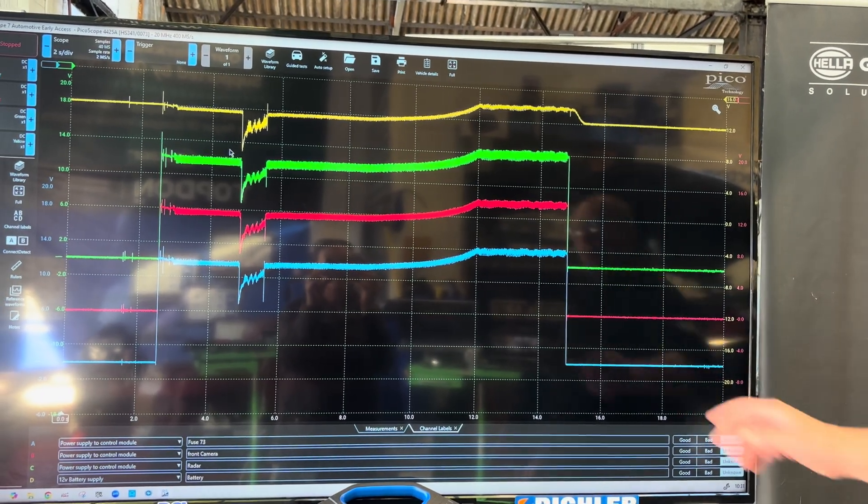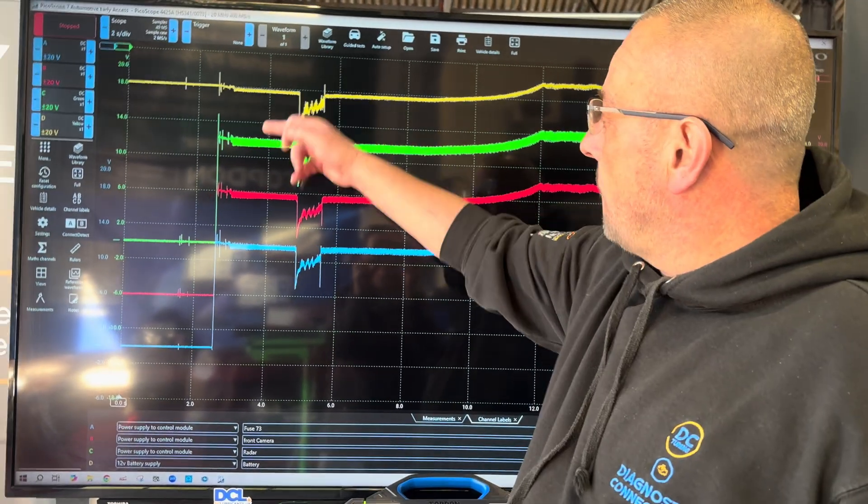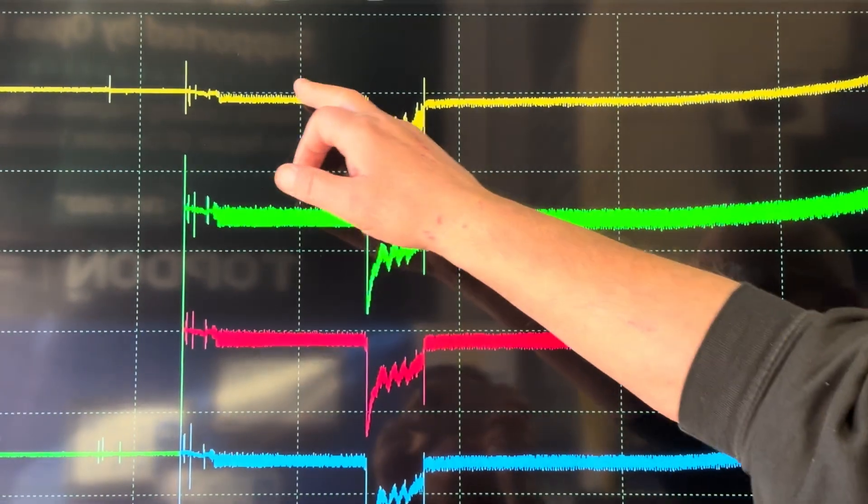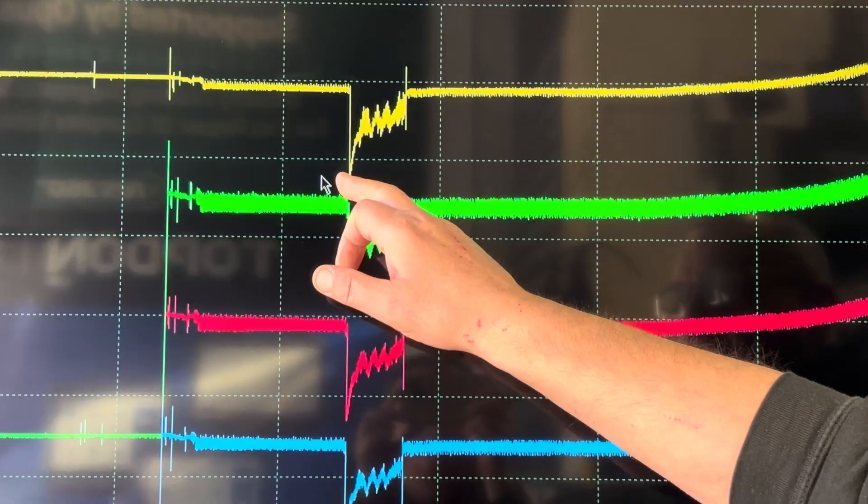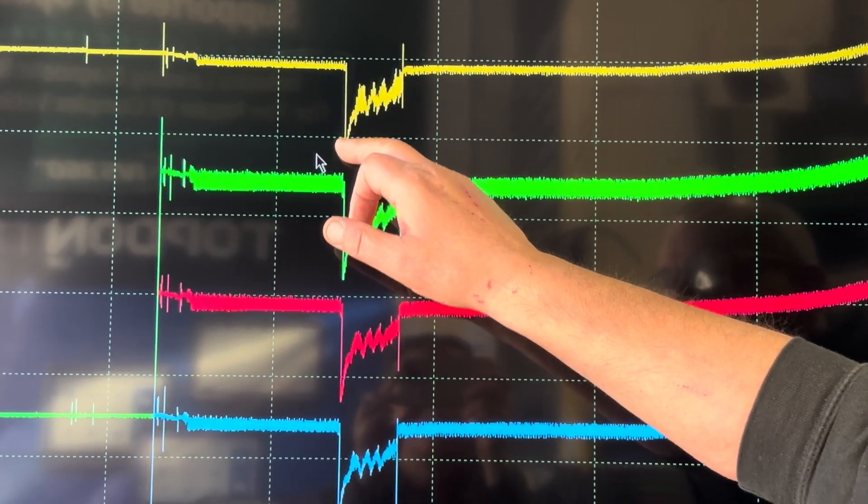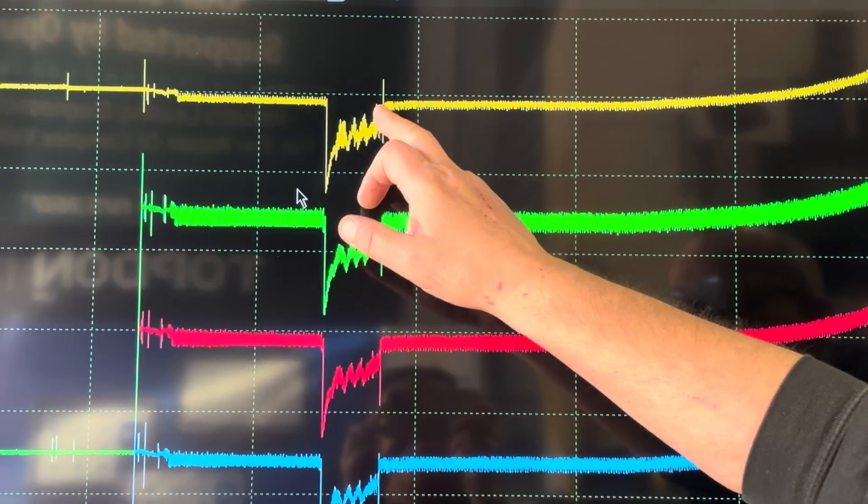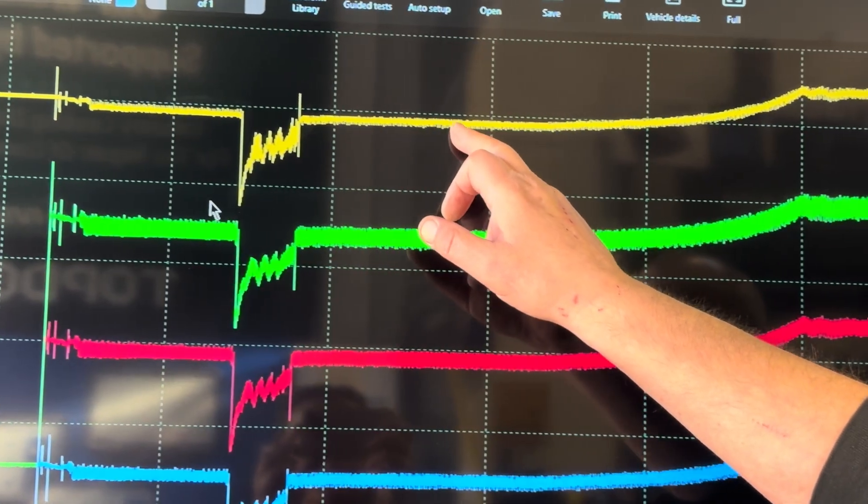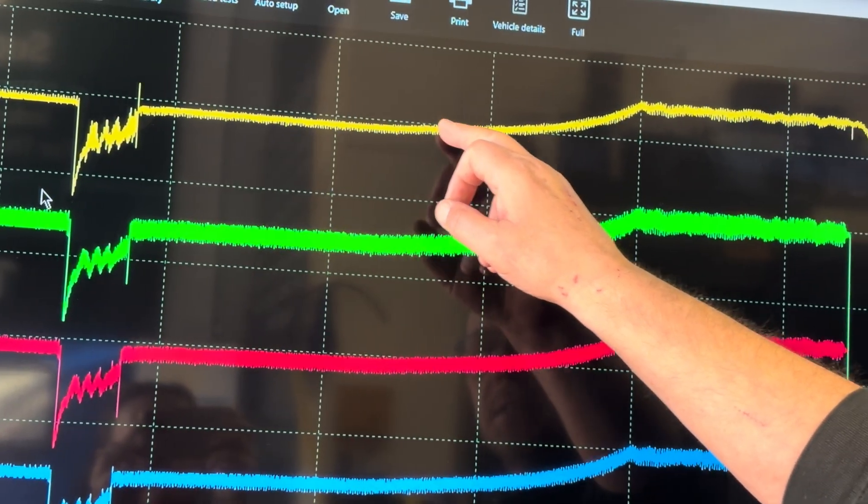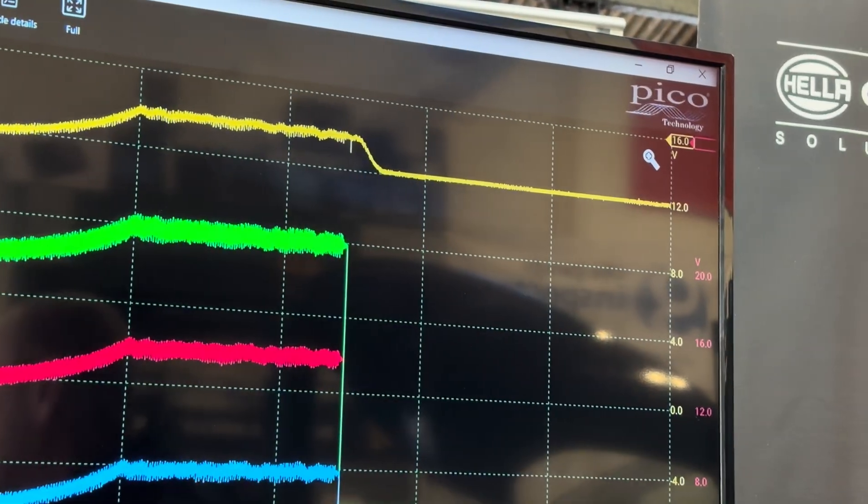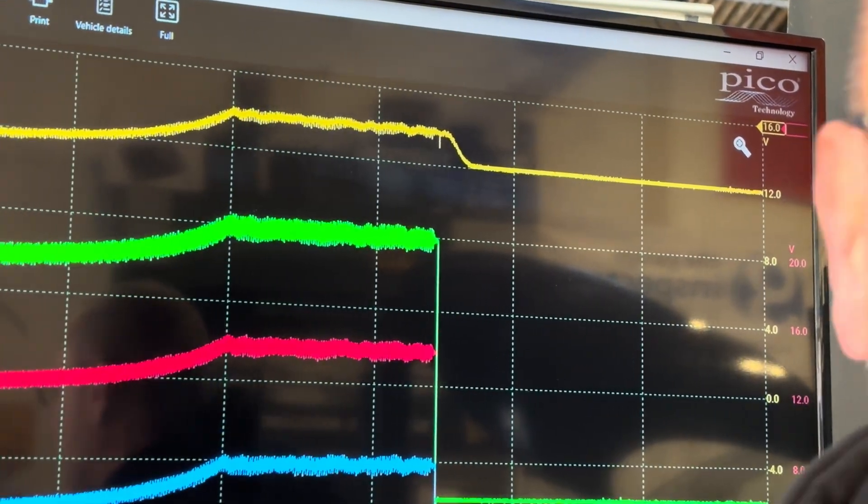All right, so what we've got here, we've got our key on voltages in this section. When the starter's engaged, we can see the voltage drop, we can see the actual cranking of the engine. And then we can see the engine is now running, and then the alternator starts charging and it comes up to charging voltage. So let's drop some rulers down onto this and take some measurements.